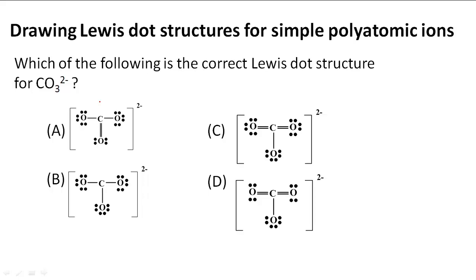Drawing Lewis dot structures for simple polyatomic ions. In this problem it says which of the following is the correct Lewis dot structure for CO3 2- negative.